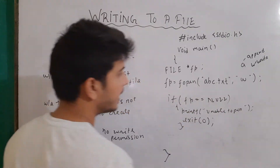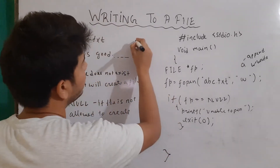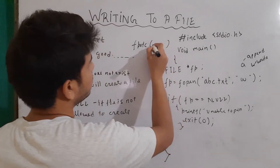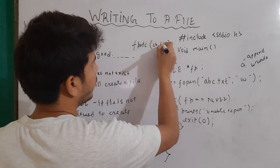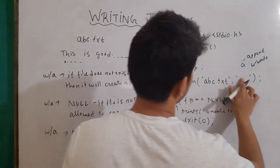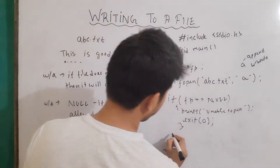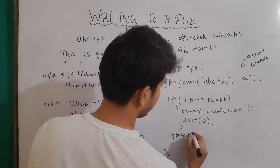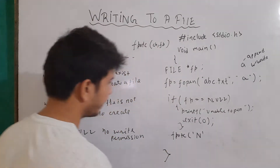If fp is not equal to null, that means our file has been opened successfully. Now, to write content, we can use the function fputc. It takes two things: first of all the character, and then the file pointer. Let's say that I had opened the file in the append mode. So I'll write fputc and then write the character 'n'. Note that we have to write the content character by character.